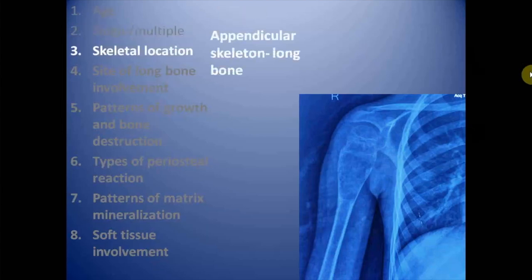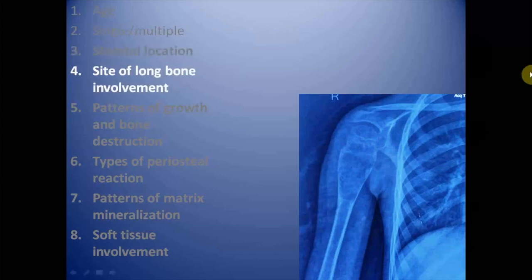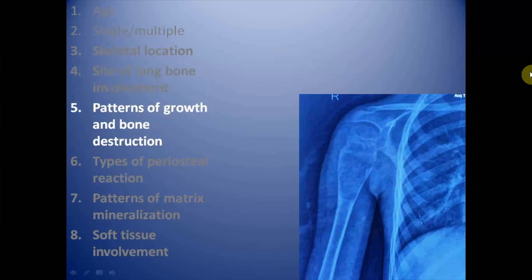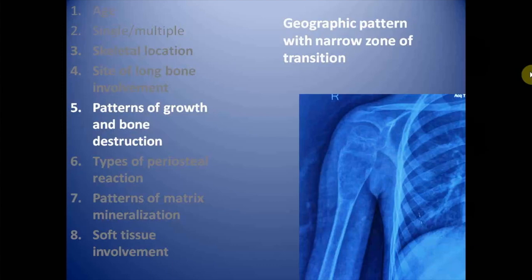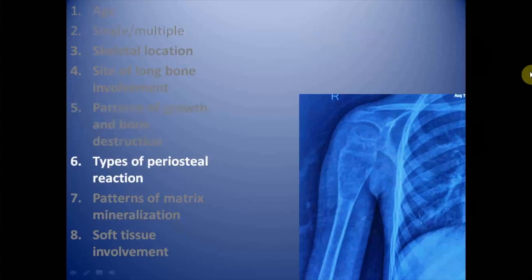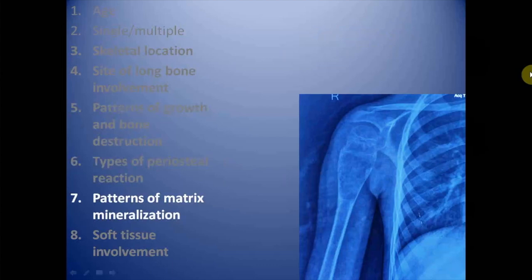The lesion is single. Skeletal location is the appendicular skeleton involving a long bone. Site of long bone involvement is metadiaphyseal and it is central with mild expansion. Pattern of growth and bone destruction: the lesion has a geographic pattern of bone destruction with a narrow zone of transition. There is no obvious periosteal reaction, no obvious matrix mineralization, and no obvious soft tissue involvement.